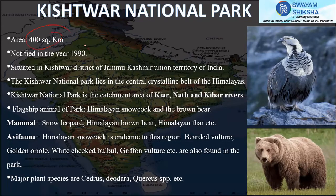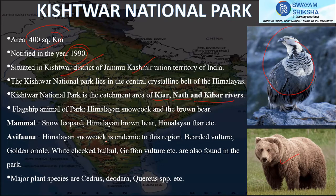Kishtwar National Park covers 400 square kilometers and was notified in 1990. It is situated in the Kishtwar district of Jammu and Kashmir and has a catchment area of the Kiarnag and Kibar rivers. Its flagship animals are the Himalayan Snow Cock, which is endemic to this region, and the brown bear. Major plant species are Cedar and Deodar in coniferous alpine vegetation.